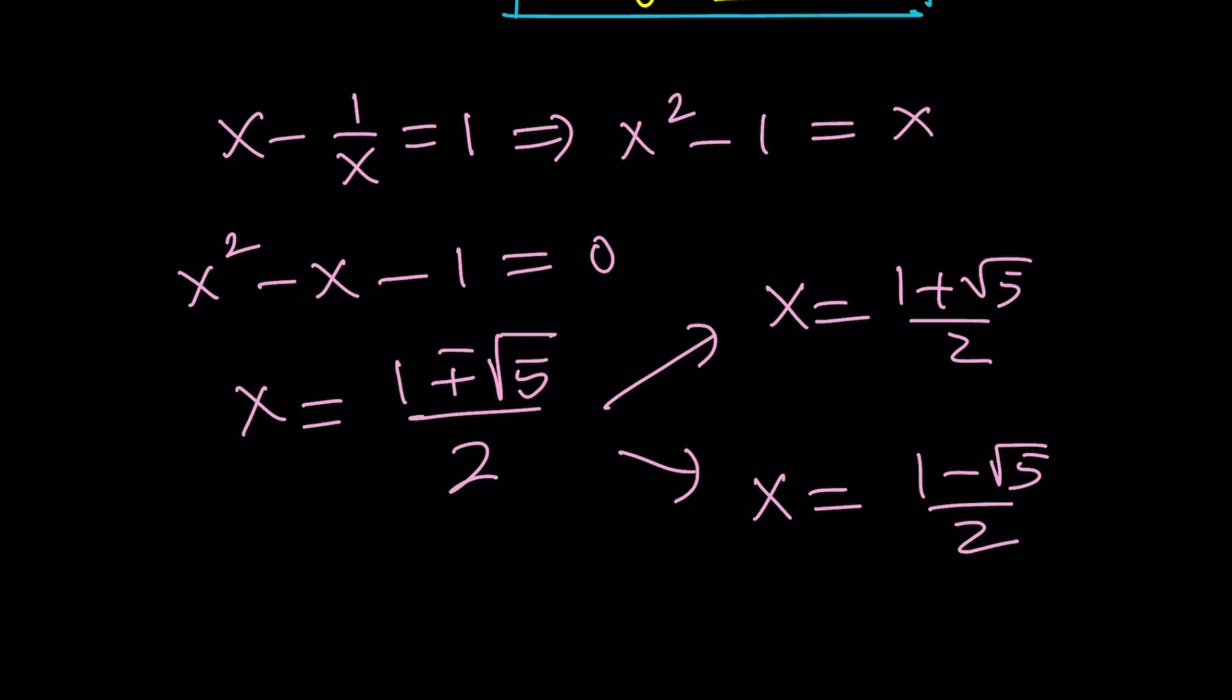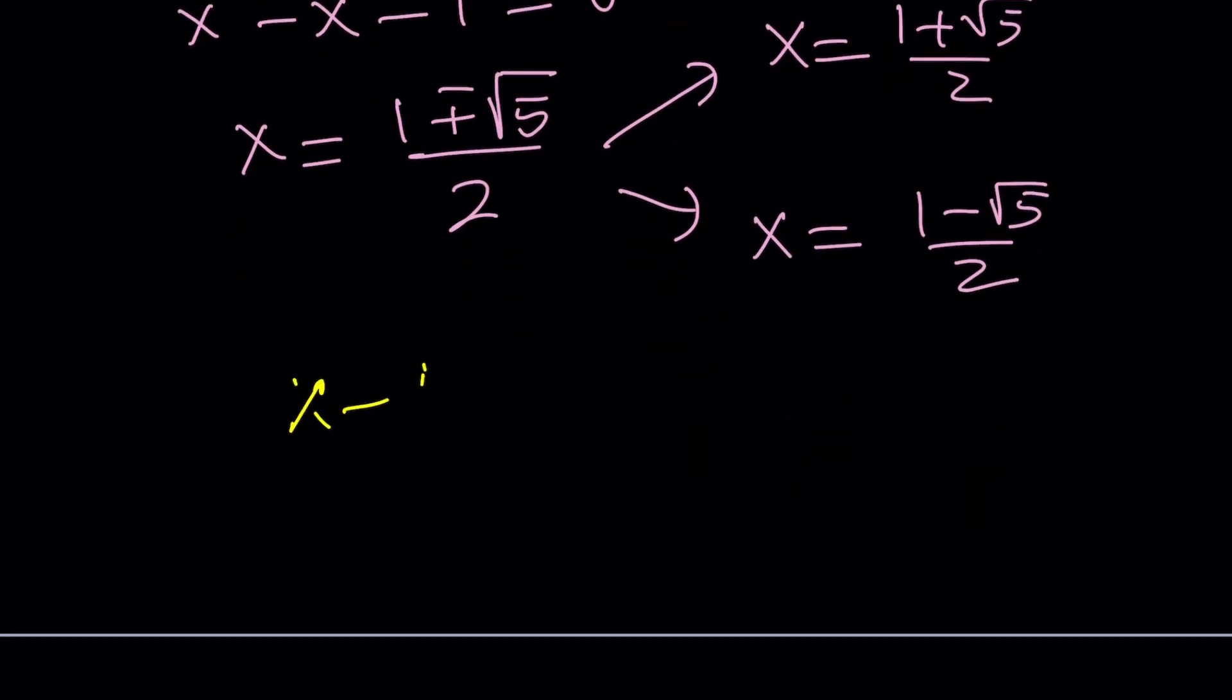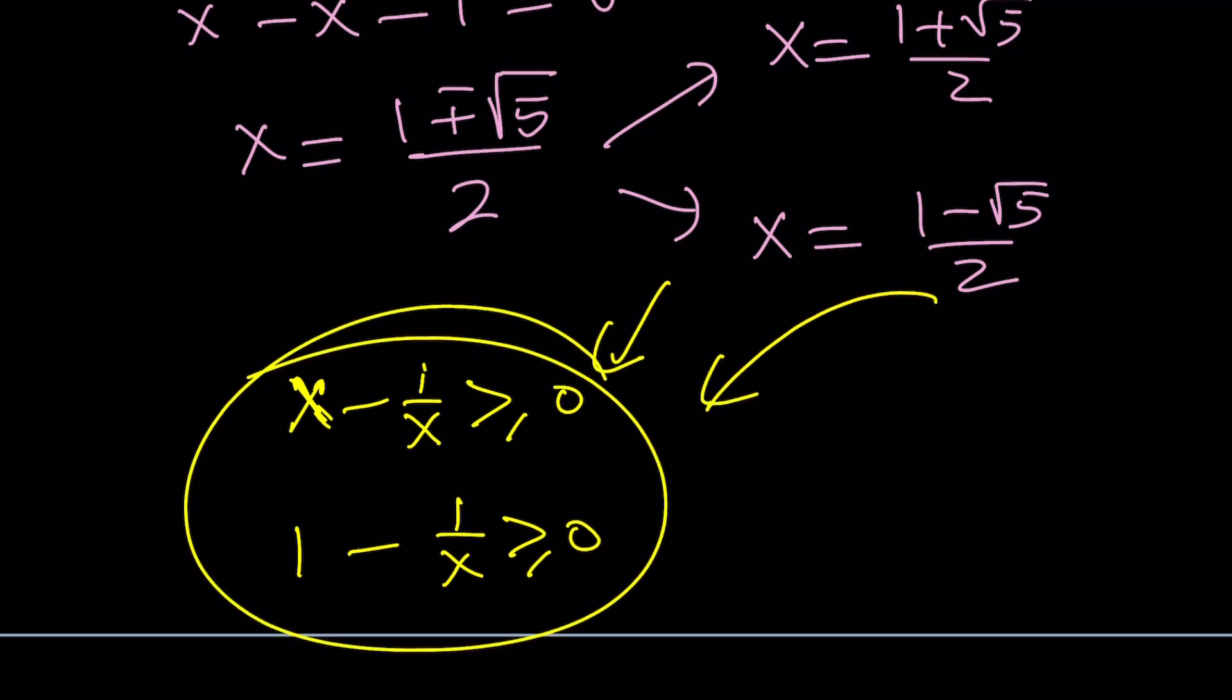But here's the question, the million dollar question. Are both solutions going to satisfy this equation? You can actually go ahead and check. So, for our domain actually we do need x minus 1 over x to be greater or equal to 0 and 1 minus 1 over x greater or equal to 0. So, you can go ahead and check these roots against those or solve the inequality and then see what the solutions are going to be like. But that part is left as an exercise for you.